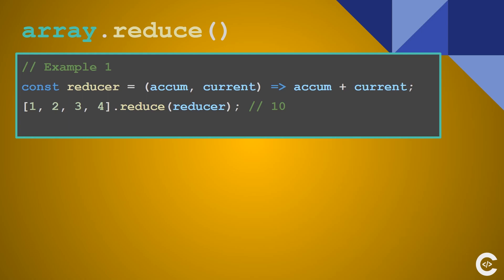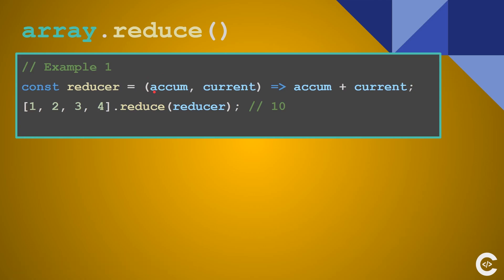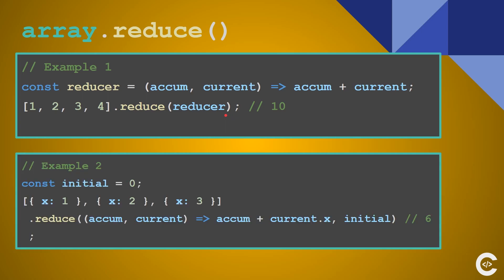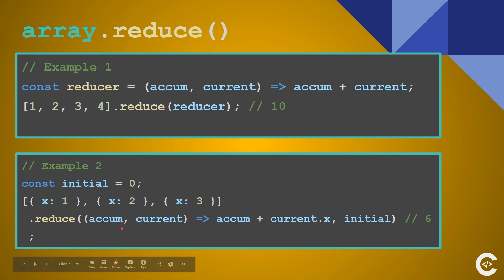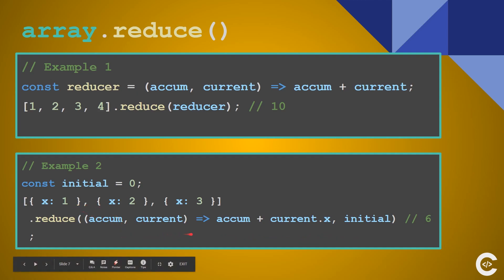Reduce. This basically reduces all elements into a single value. In this case it calculates the sum of the array. The first argument of reduce is the accumulator, which accumulates all values, and the second element of the callback is the current. You can also pass an initial value to reduce — in this case it's zero. Without initial value, the accumulator will be the first element on the first execution and current will be the second. Passing an initial value is the safer version to calculate the sum.